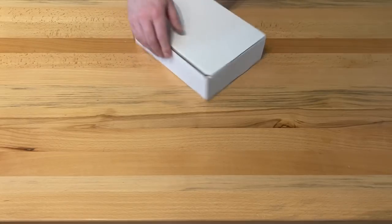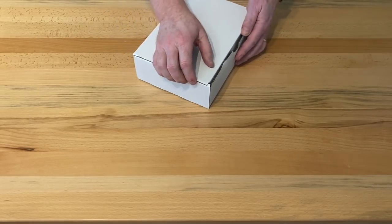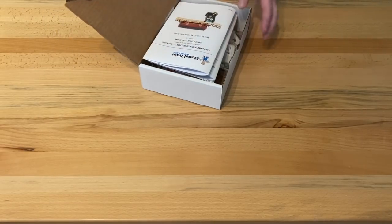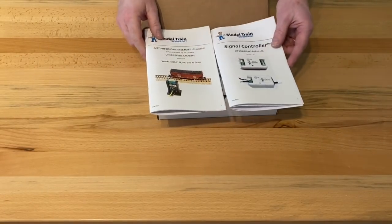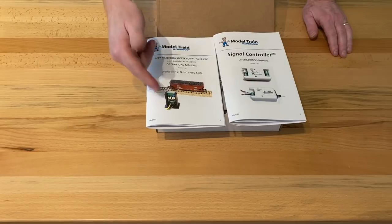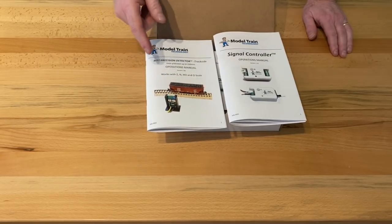Alright, so let's get started. Let's look at what's in the box and how you can get started with some very simple, very powerful signaling for your model layout. So here we have the Model Train Technology Signaling Startup Kit. Depending on how many extra components you buy, you'll come in a box this size or maybe a little smaller.